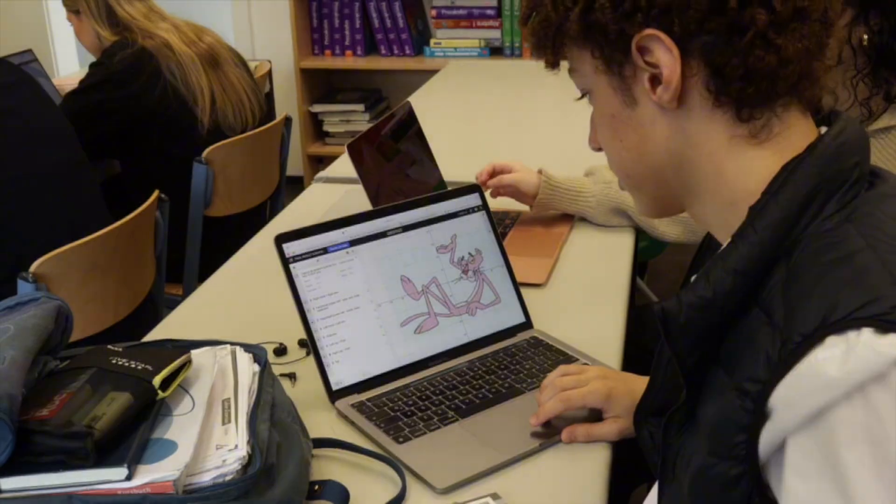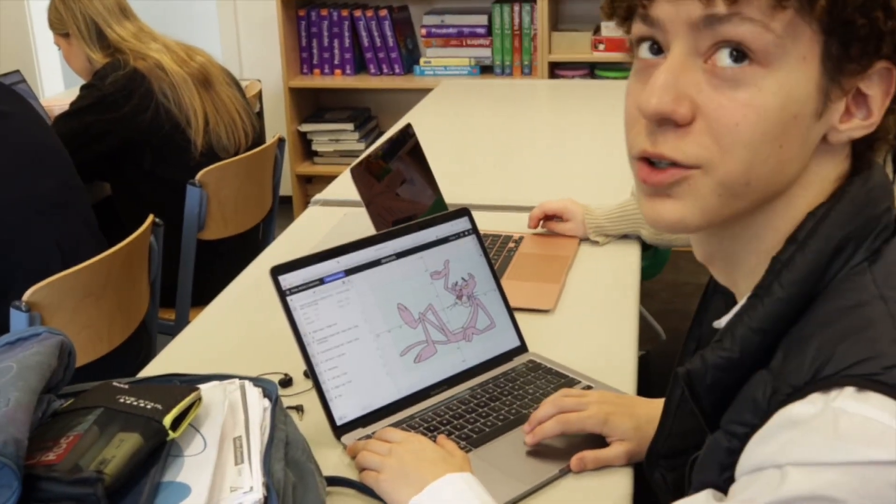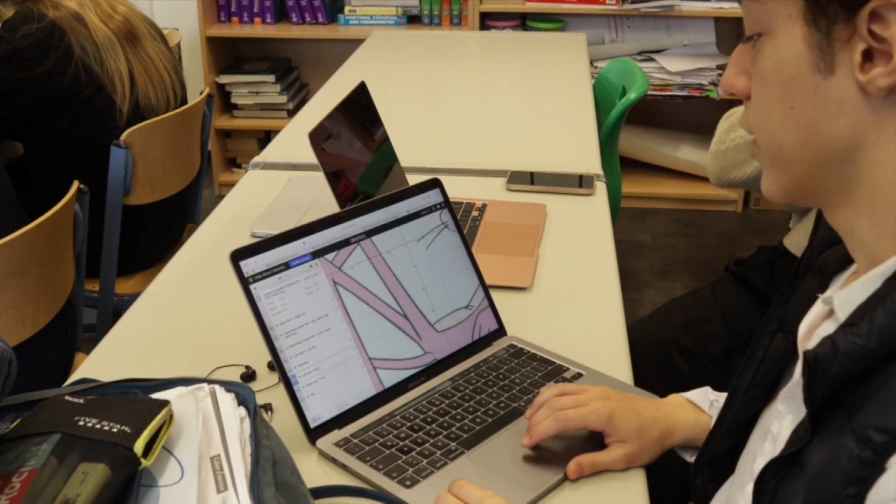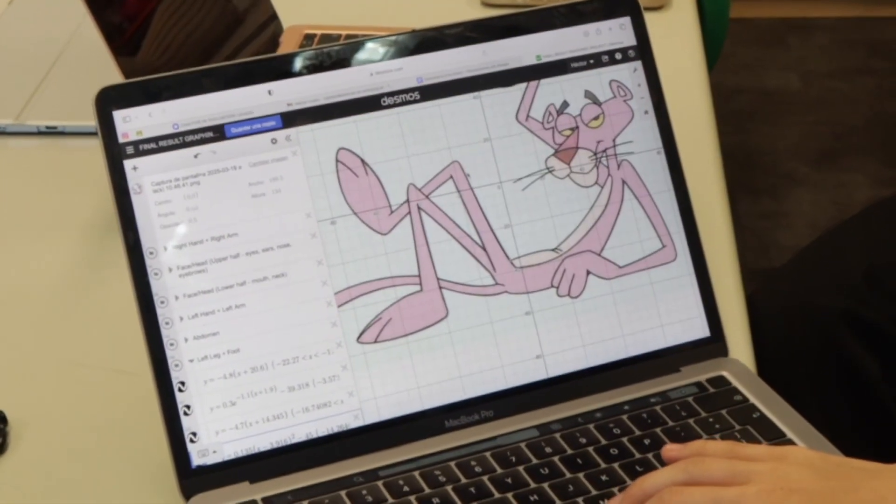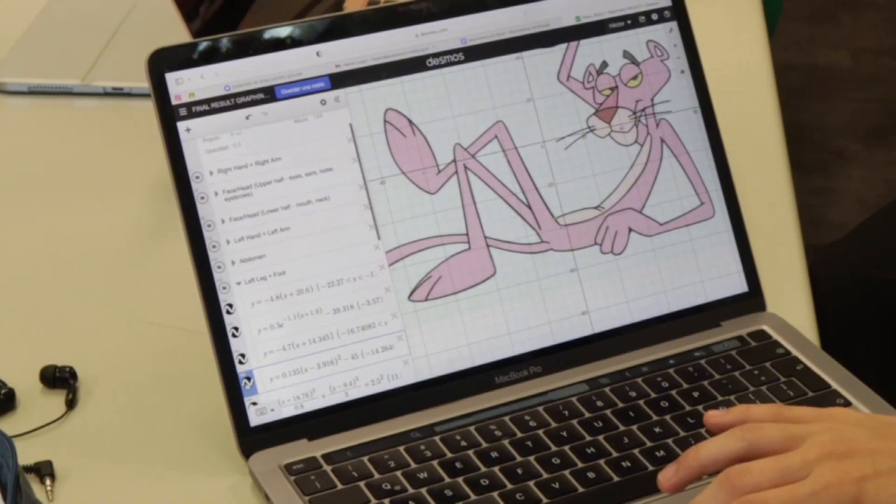So how many functions did you use? 196 almost, 200. It was that they seem to be straight lines but they're not. And you actually have to do them by parts. Even though it looks like a complete line, you have to do it by parts. It takes a lot of time.